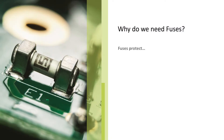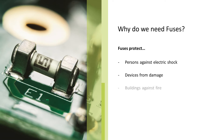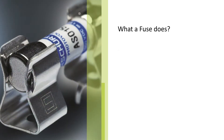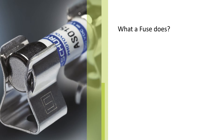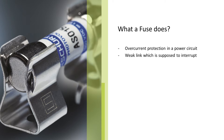Electrical circuits use fuses to prevent electrical overload to the circuit and possible fires stemming from that overloaded circuit. A fuse is an overcurrent protection against short circuits. It is a weak link which is supposed to burst or interrupt before any other component is being damaged by that short circuit.